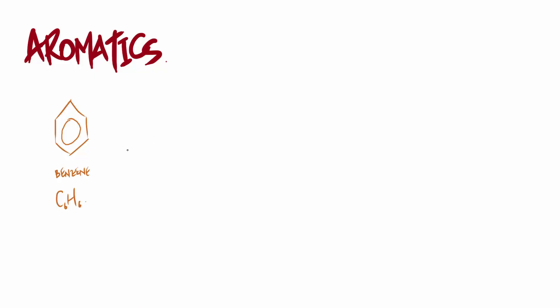Cyclohexane, for example, isn't classed as aromatic. Benzene is really your main aromatic compound, and derivatives of benzene - different forms of benzene. The other type, just to compare, is something called aliphatic. Aliphatic would be your standard skeletal formula - not a ring, your classic linear format. That's aliphatic, as opposed to aromatic, which is benzene, C6H6.